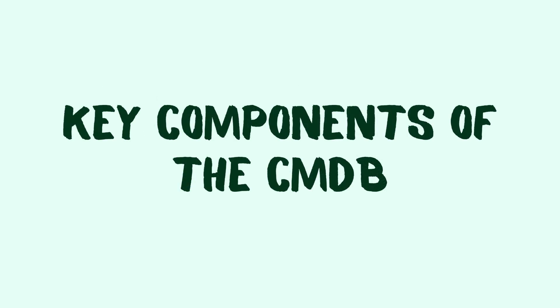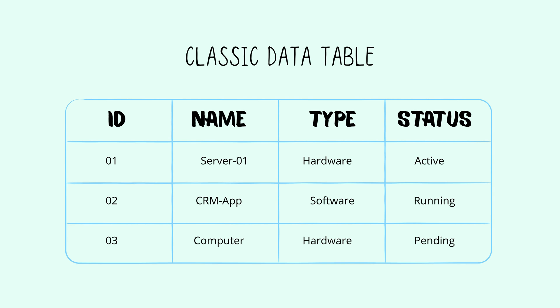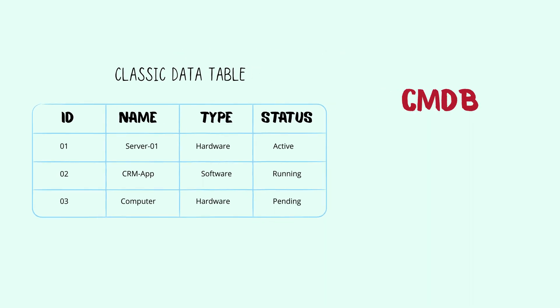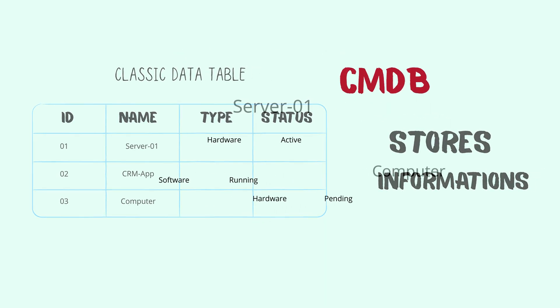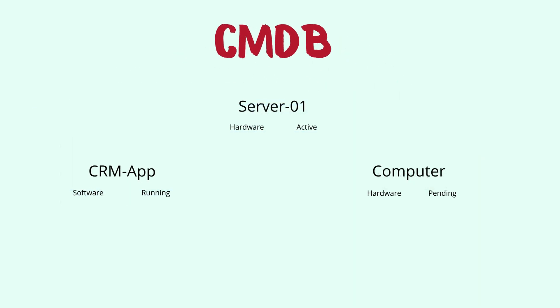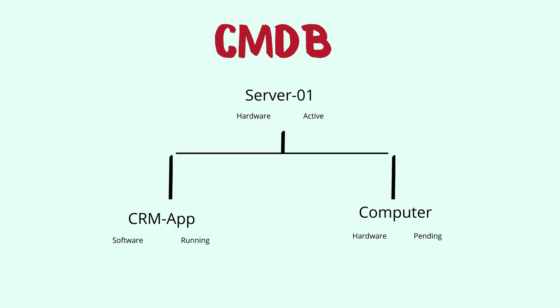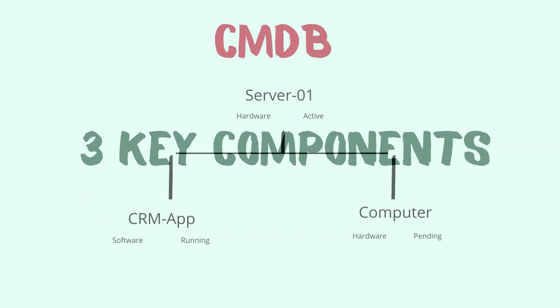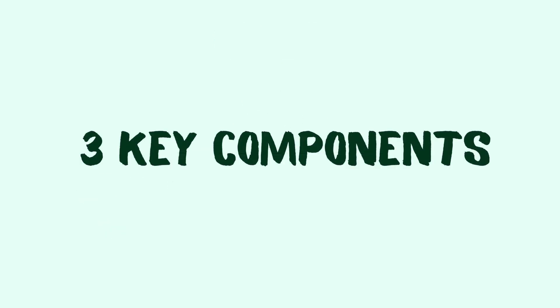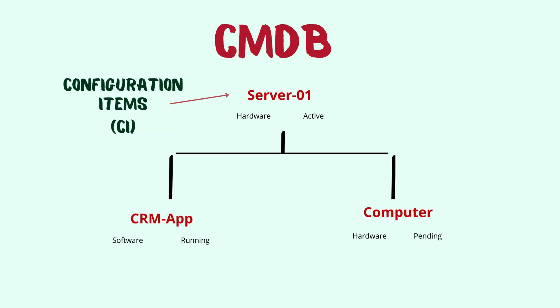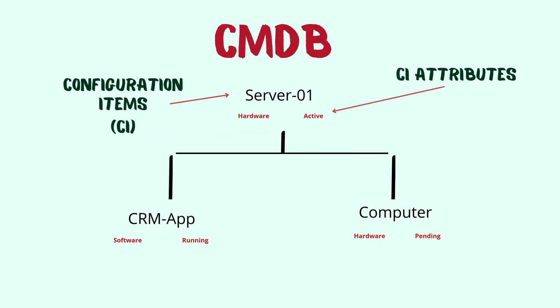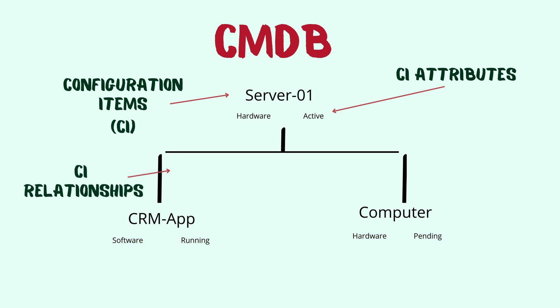Let's look at the key components of the CMDB. Like any database, CMDB stores information — but the difference is that CMDB makes sure the info is organized and shows how assets are interconnected. There are three key components: Configuration Items (CIs), CI Attributes, and CI Relationships.